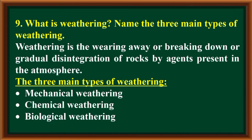What is weathering? Name the three main types of weathering. Weathering is the wearing away, breaking down, or gradual disintegration of rocks by agents present in the atmosphere. The three main types of weathering are: mechanical weathering, chemical weathering, and biological weathering.